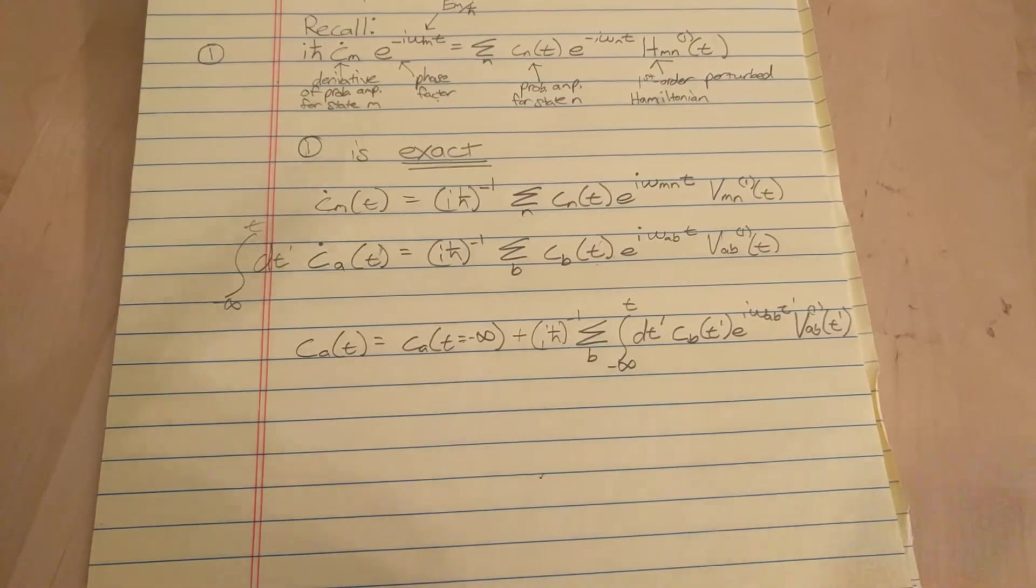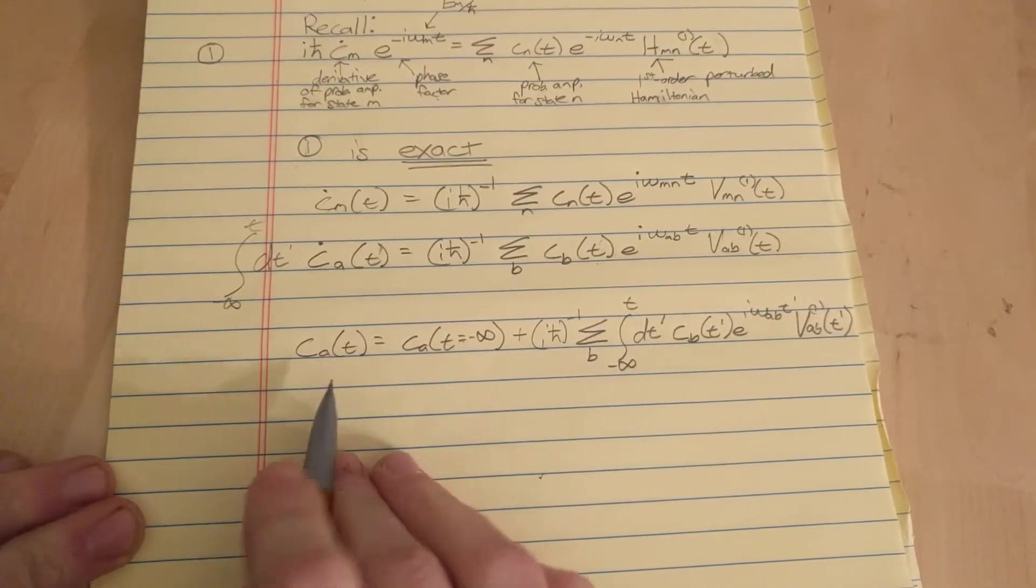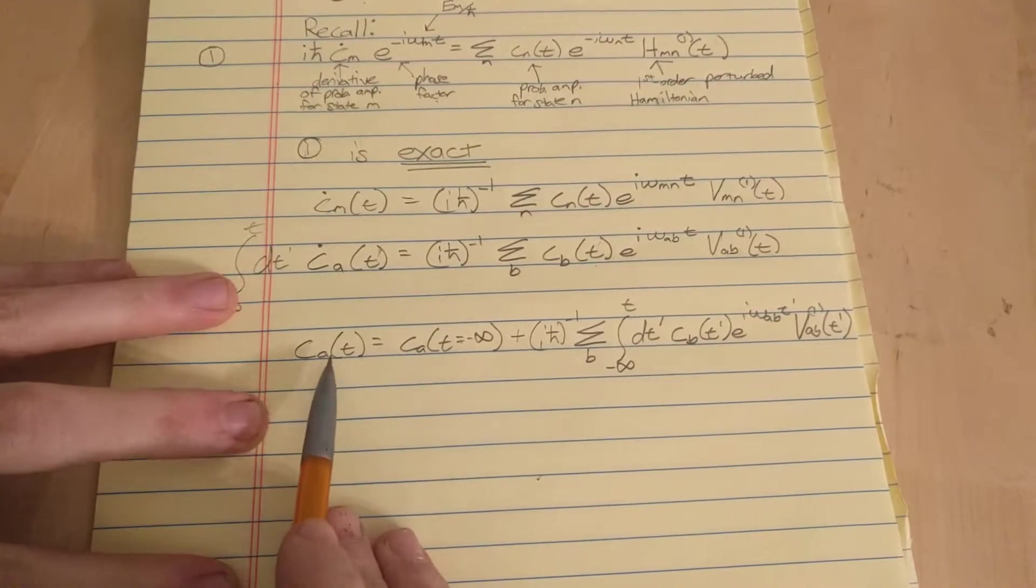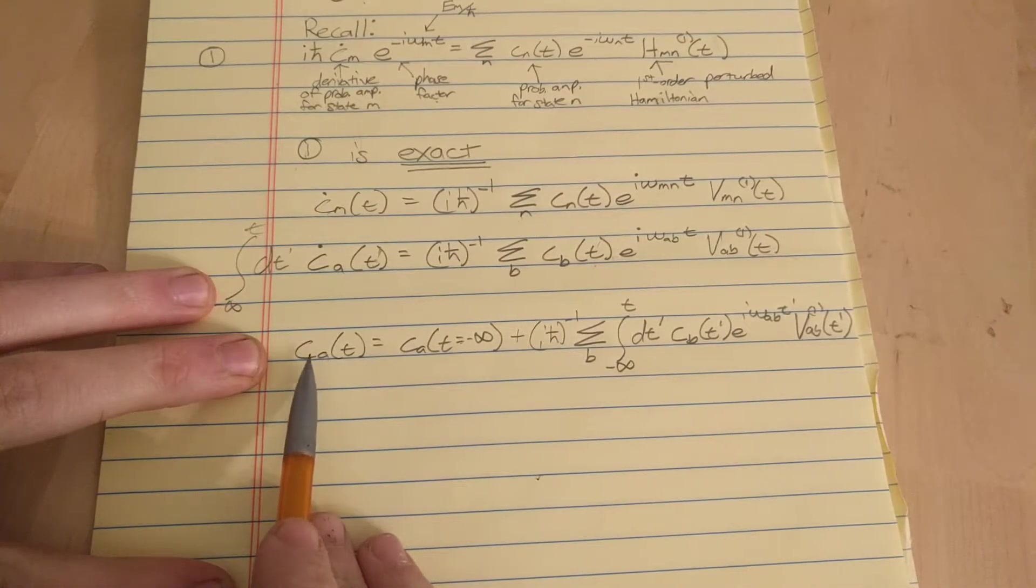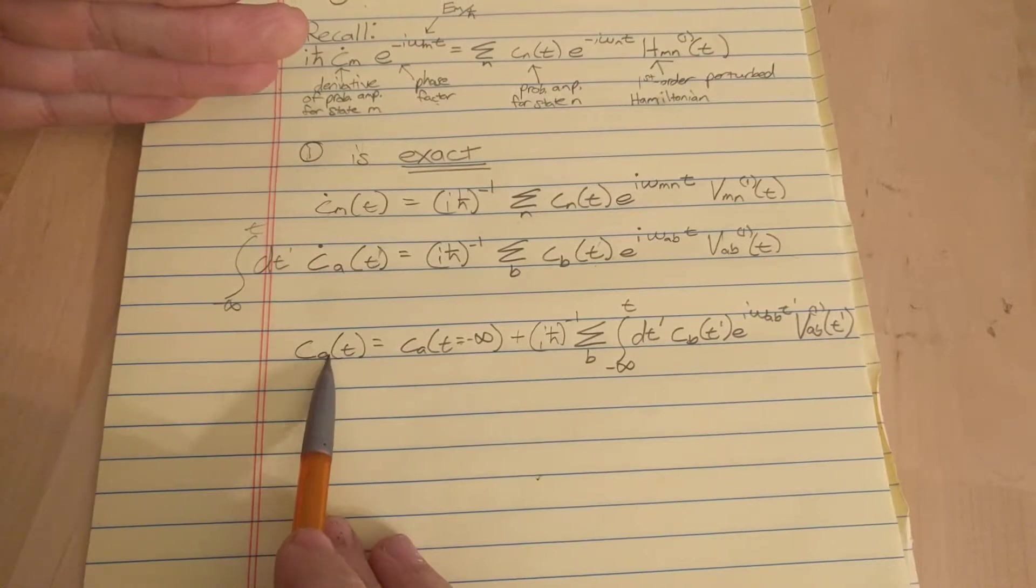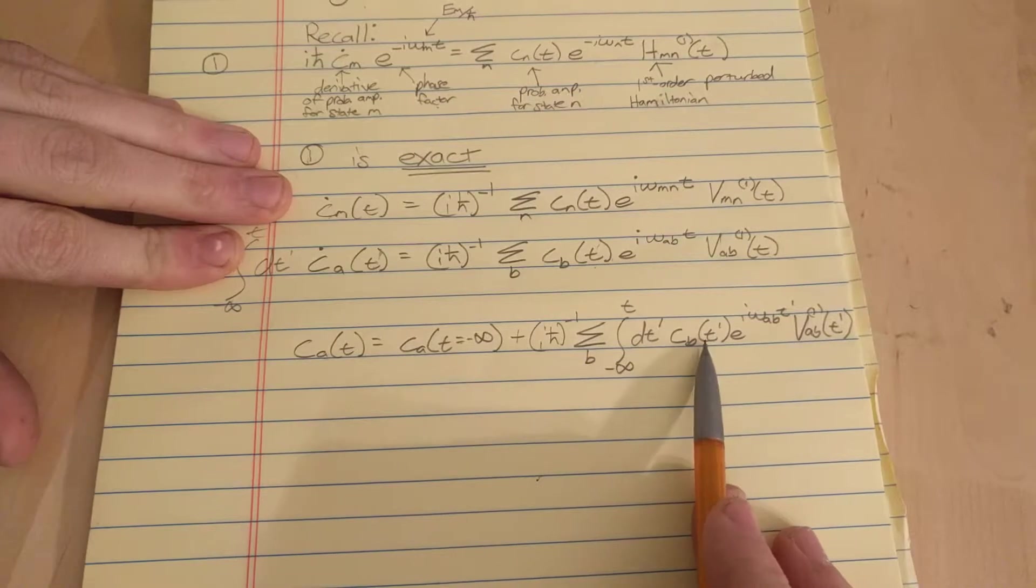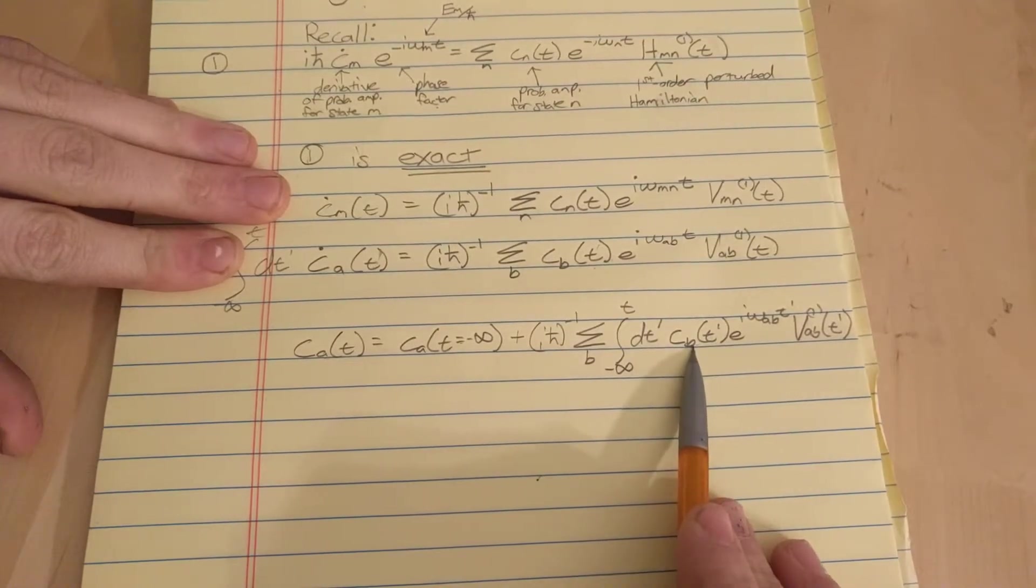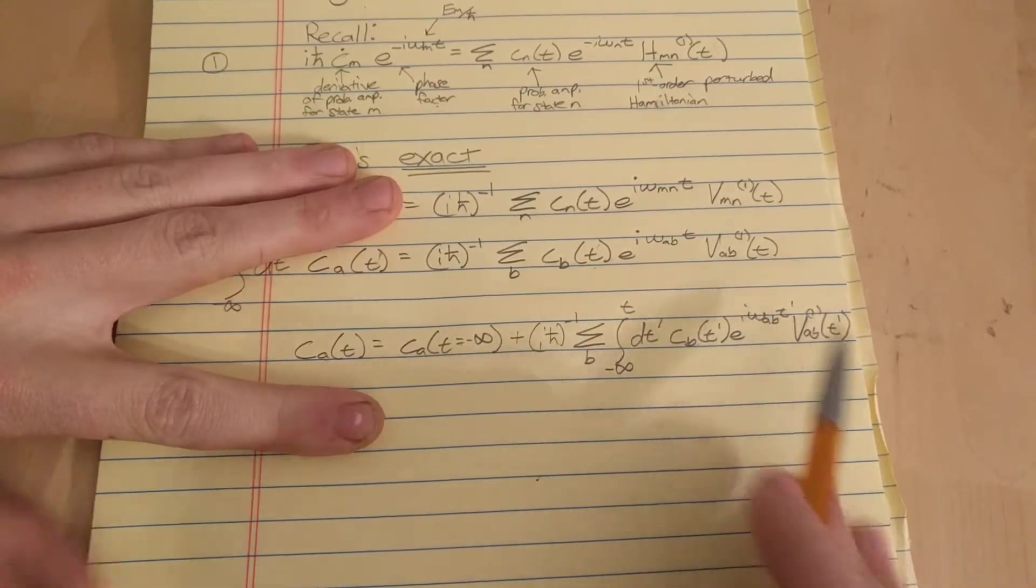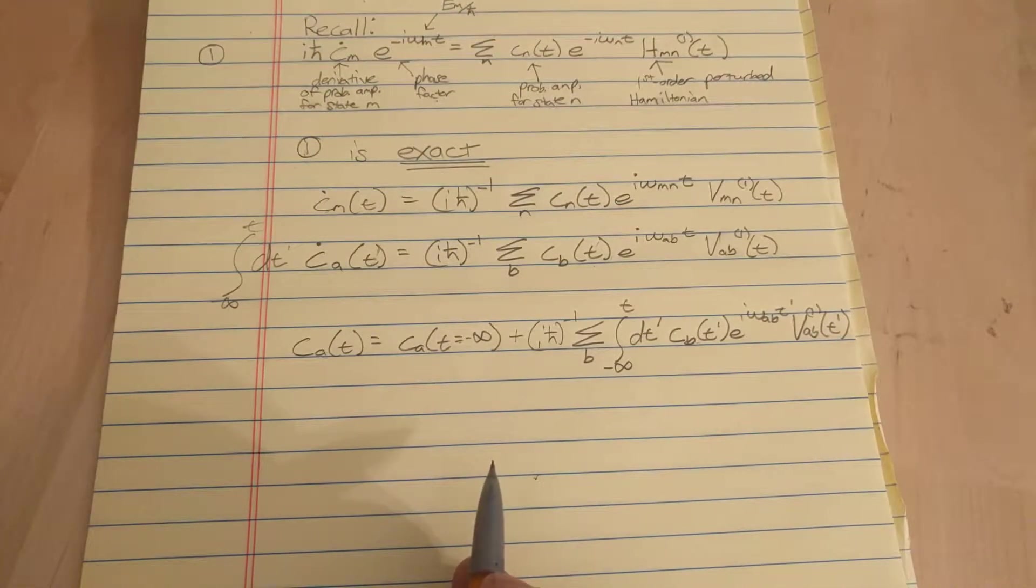Hopefully you're still with me. I haven't really done anything crazy. It's about to get real crazy. So this is what time dependent perturbation theory tells us. It tells us that we can solve for c a perturbed up to the nth order. We can solve for that by plugging in the n minus 1th perturbation on the right side of the equation, or I mean this term of the equation.